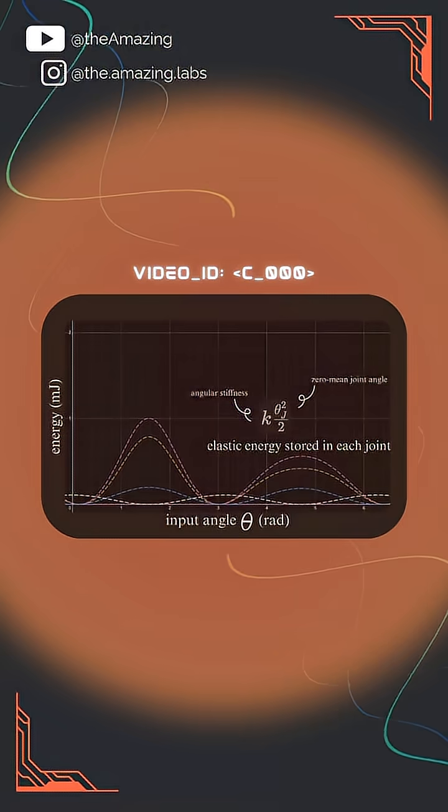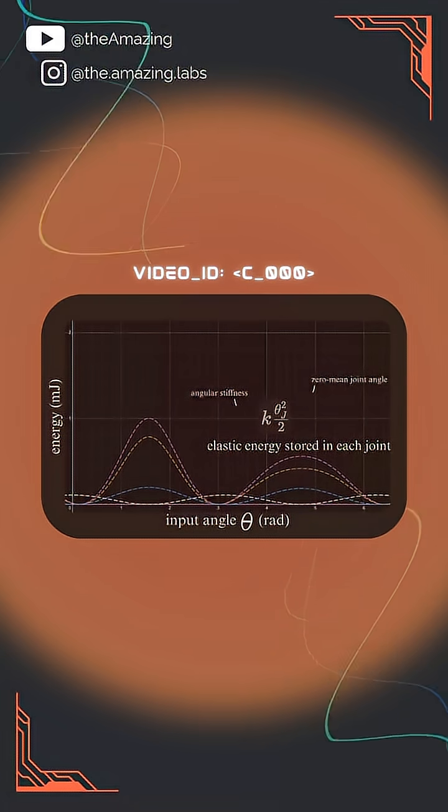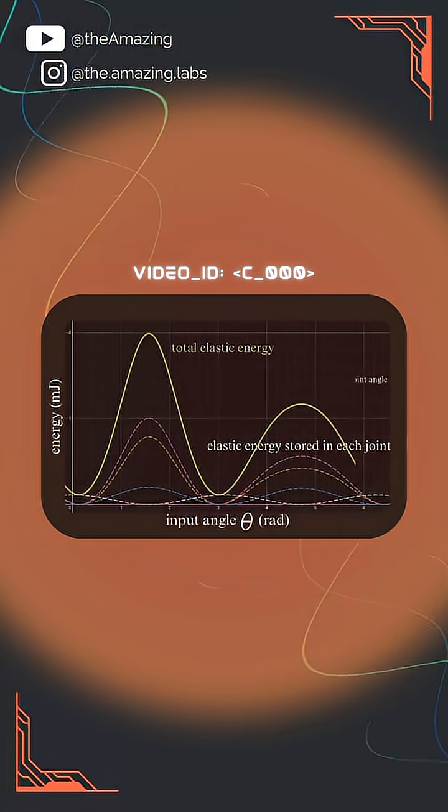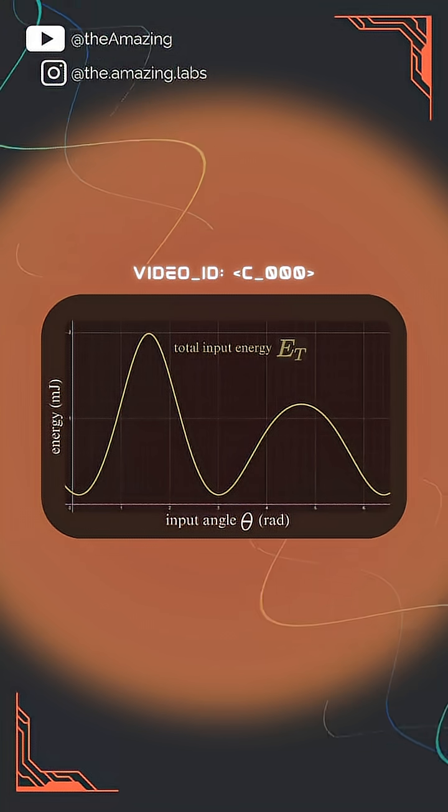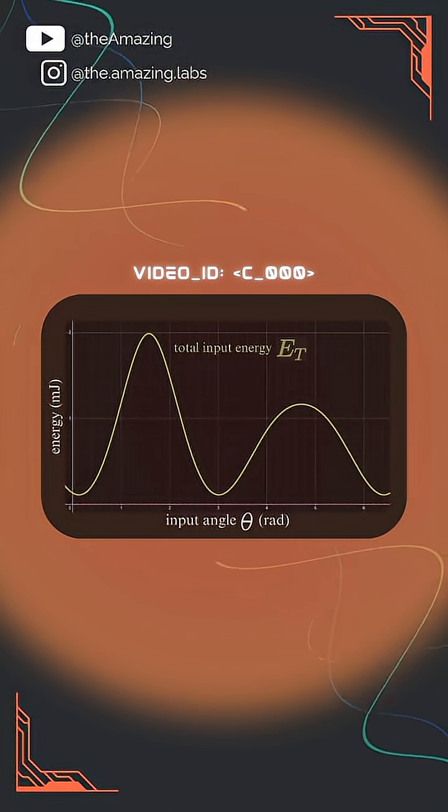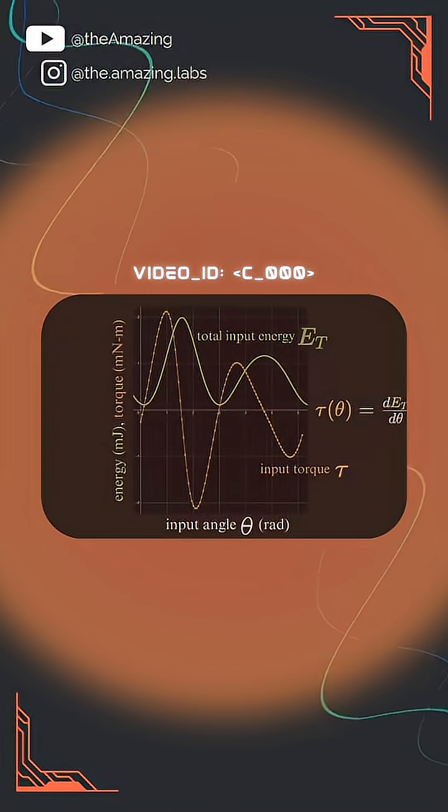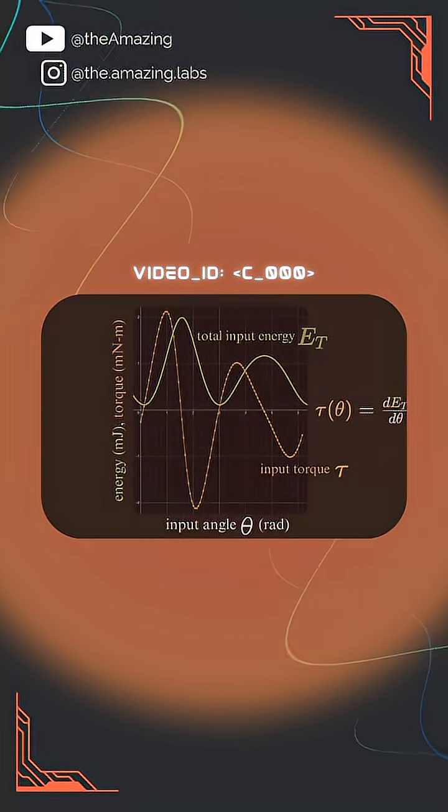The total amount of energy stored in the joints must be the same as the total amount of energy that has been transferred to the leg via the input, assuming no losses. All we have to do to get the torque input is to take the derivative with respect to the angular position.